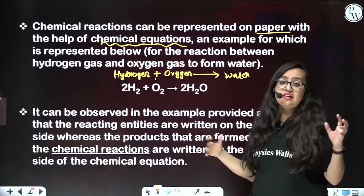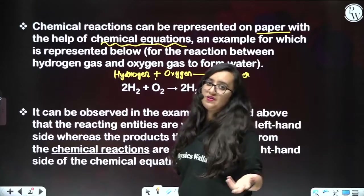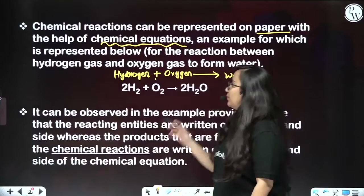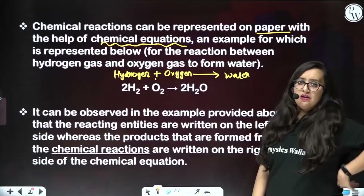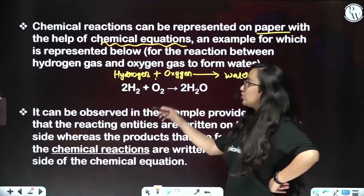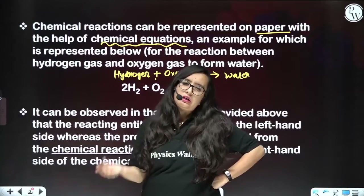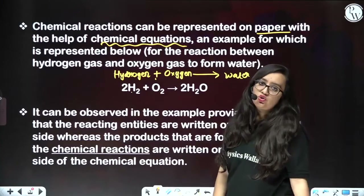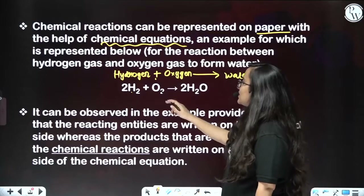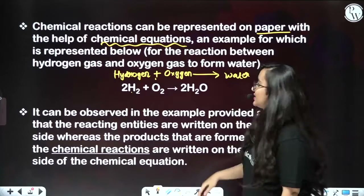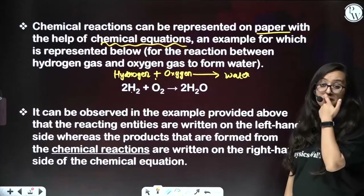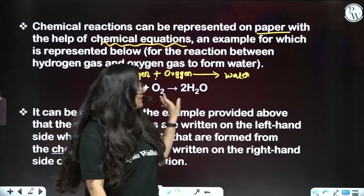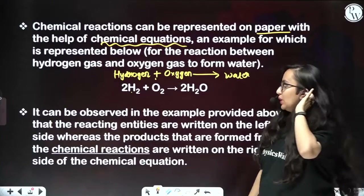This plus sign indicates that there are more than one reactant present — a combination of two or more reactants giving one product. But we want an even shorter way. So instead of hydrogen I wrote H2, instead of oxygen I wrote O2, and instead of water I wrote H2O. There can be no shorter way than this, and this is your chemical equation.